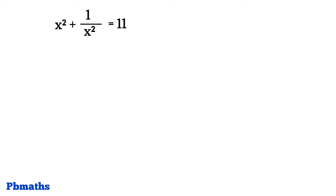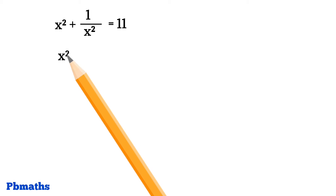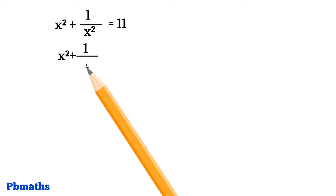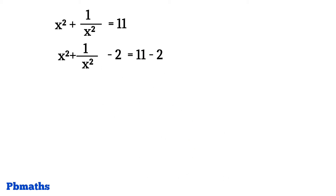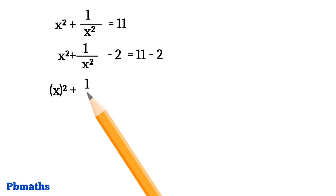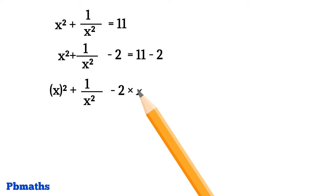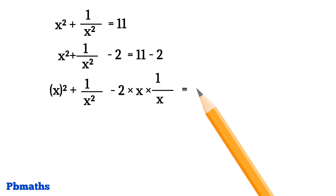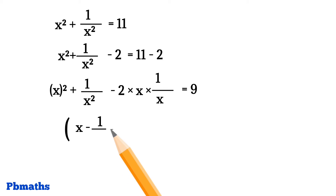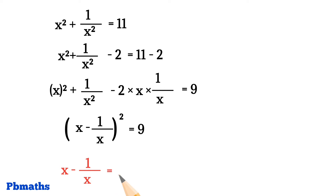Now let's subtract 2 on either side of the equal. By subtracting 2 on either side, we have x square plus 1 by x square minus 2 equals to 11 minus 2. x square could be written as x whole square, plus 1 by x square could be written as 1 by x whole square, minus 2 we can write as 2 into x into 1 by x, equals to 11 minus 2 which gives us 9. Then that expression is in the form of x minus 1 by x whole square which is equals to 9. Let's again apply square root on either side. We have x minus 1 by x equals square root of 9, that is 3. So x minus 1 by x equals to 3.